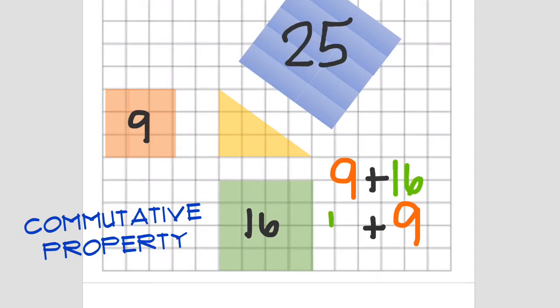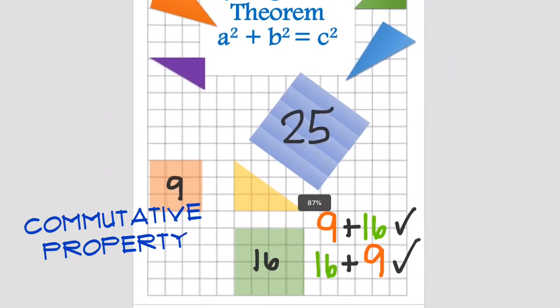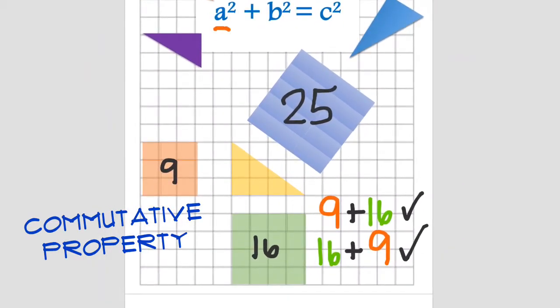Also, think about the commutative property. Nine plus 16, that equals 25. Then 16 plus nine equals 25. How does that work? Well, if A plus B equals C, then B plus A will also equal C.